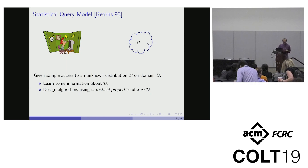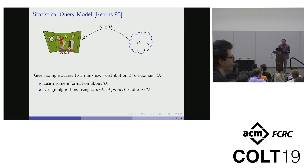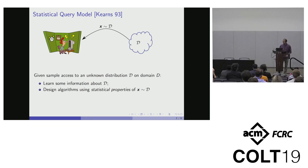In general, we think of these algorithms as working by taking some random samples, then doing some computation and outputting something. What Kearns suggested in '93 is that we should restrict the class of algorithms we focus on to these called statistical query algorithms. The high-level idea is that we want our algorithms to take into account these high-level trends, these statistical properties of the distribution, rather than the nuances of particular samples.